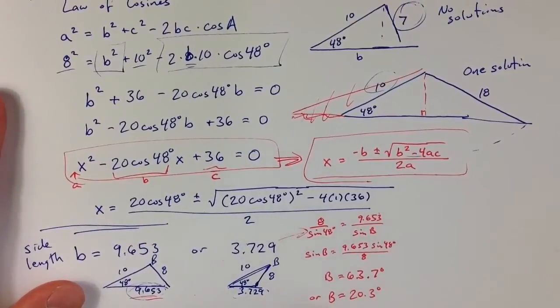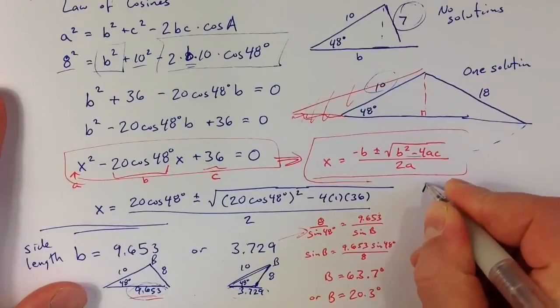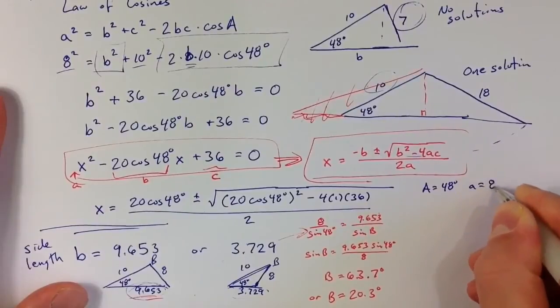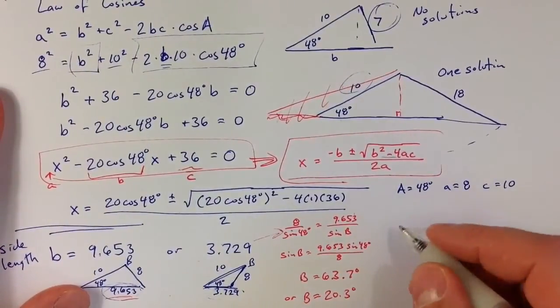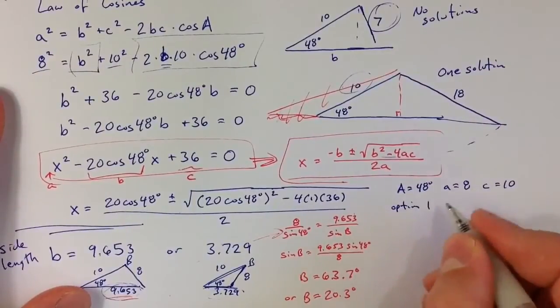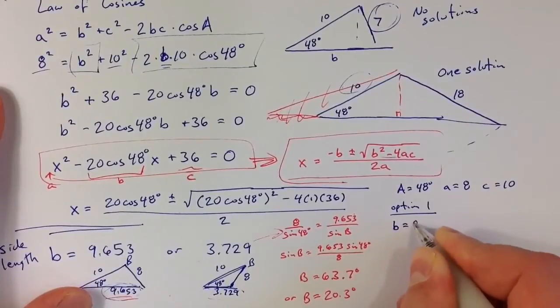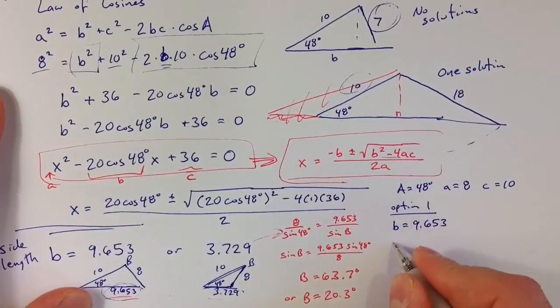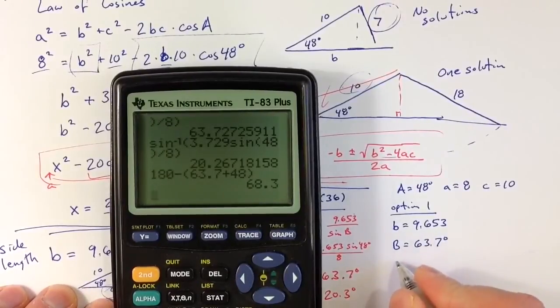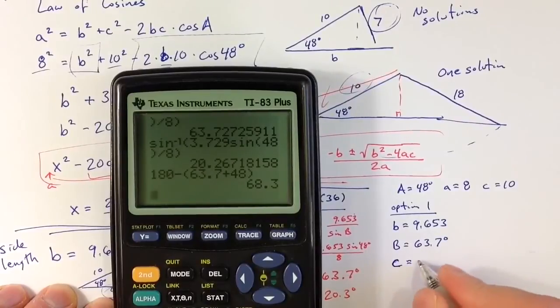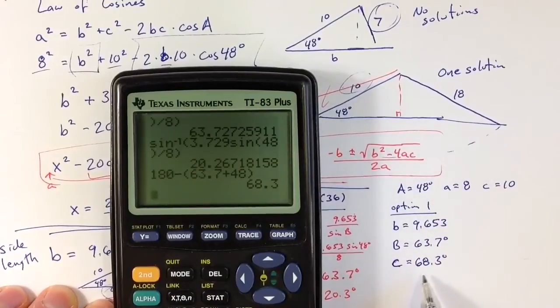So the final answer involves two sets of values. We were given that angle A equals 48 degrees, side a is 8, and side c was also given as 10. Based on that set of given information, there are two possible solutions. So option one we found was a side length for b of 9.653. And in that case, then angle B is a little bit larger than the given angle. Angle B was 63.7 degrees. And so then the other angle has to be 180 degrees minus 63.7 plus 48, so that they all add up to 180. So the angle opposite side c, angle C, is 68.3 degrees. Side c is the biggest side, and so it makes sense that angle C would be the biggest angle.